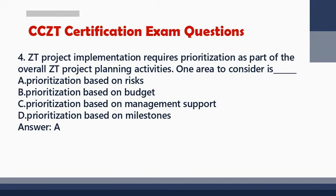Question 4: ZT Project Implementation requires prioritization as part of the overall ZT project planning activities. One area to consider is: A. Prioritization Based on Risks. B. Prioritization Based on Budget. C. Prioritization Based on Management Support. D. Prioritization Based on Milestones. Answer: A.